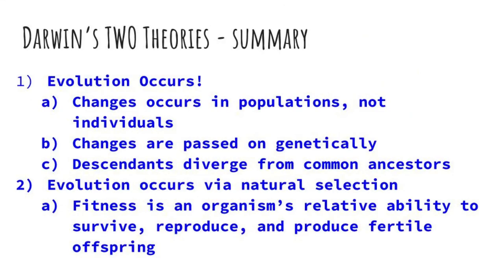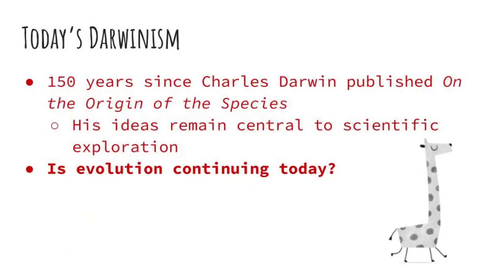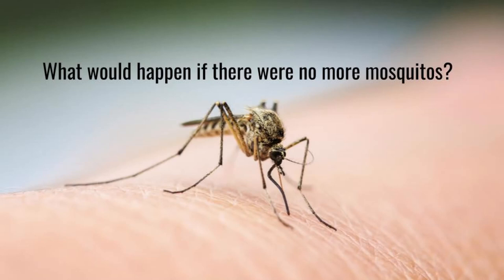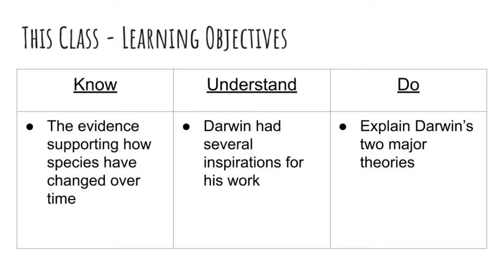Let's summarize. Darwin's two theories are as follows. One: evolution occurs, and these changes occur in populations, not individuals. Changes are passed on genetically, and descendants diverge from common ancestors — variation occurs, and then species can split and become new species. And the second: evolution occurs via natural selection, meaning fitness is an organism's relative ability to survive, reproduce, and produce fertile offspring. It's been 150 years since Charles Darwin published On the Origin of Species, and his ideas remain central to scientific exploration. Is evolution occurring today? At the bottom of your notes, write a short paragraph discussing what you think would happen if there were no more mosquitoes in New Hampshire.